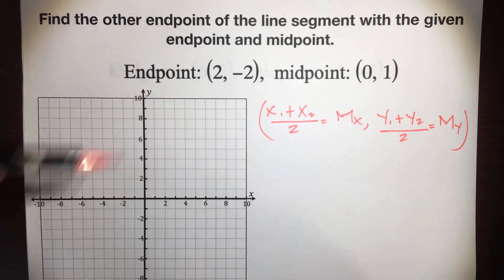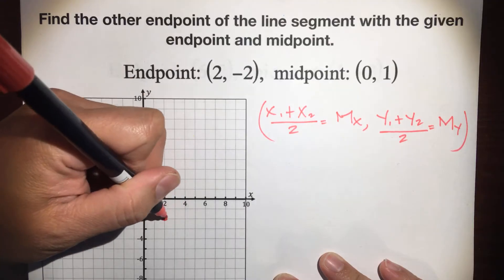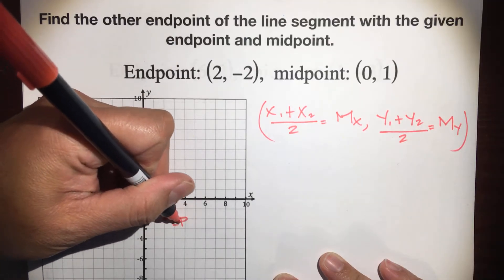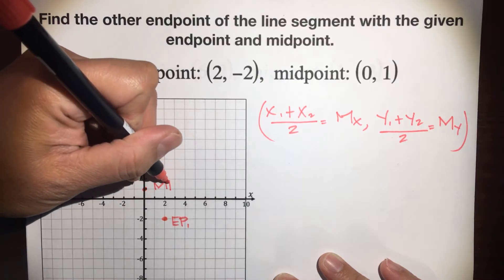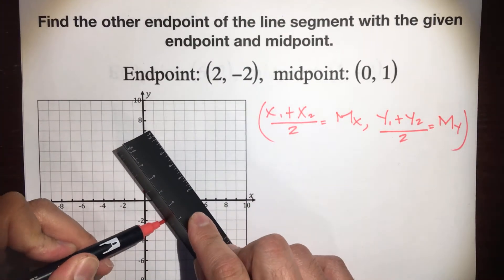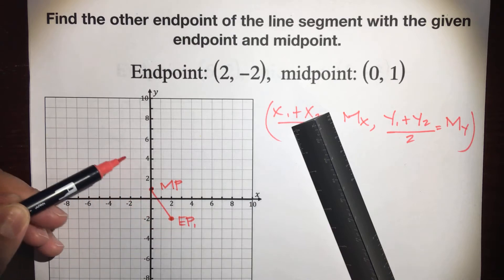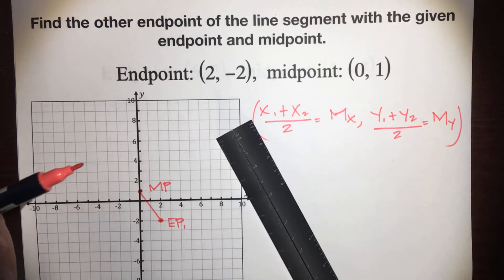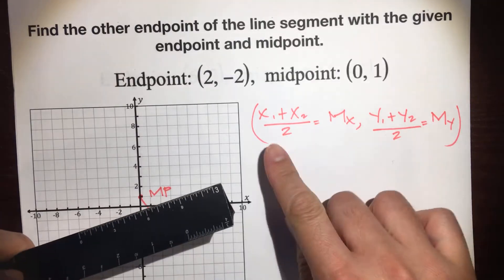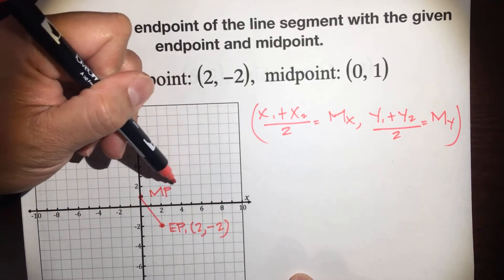Okay, so we have to know what we're going to plug in, where we're going to substitute. So here's the situation. Here's an endpoint at (2, -2). So where's 2, and here's negative 2 right here. So there's an endpoint — we're going to call it EP1, that's endpoint number 1. The midpoint is at (0, 1). So here's the midpoint, and if we connect that, where's that other endpoint at? I'm going to show you two ways.